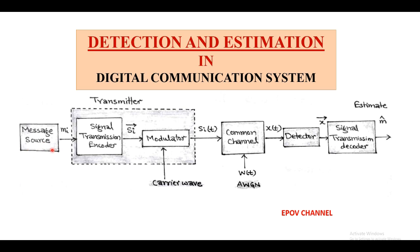The first block is the message source, which provides a discrete message in the form of a symbol, represented by m suffix i. This discrete message is first passed through the transmitter where encoding and modulation take place. The signal transmitter encoder converts discrete message m_i into a sequence of real numbers in the form of a symbol vector. After encoding, this vector sequence gets converted into a signal compatible for transmission and having some finite energy. During transmission, additive white Gaussian noise, denoted by w(t), is introduced with the information signal, called the received signal x(t).